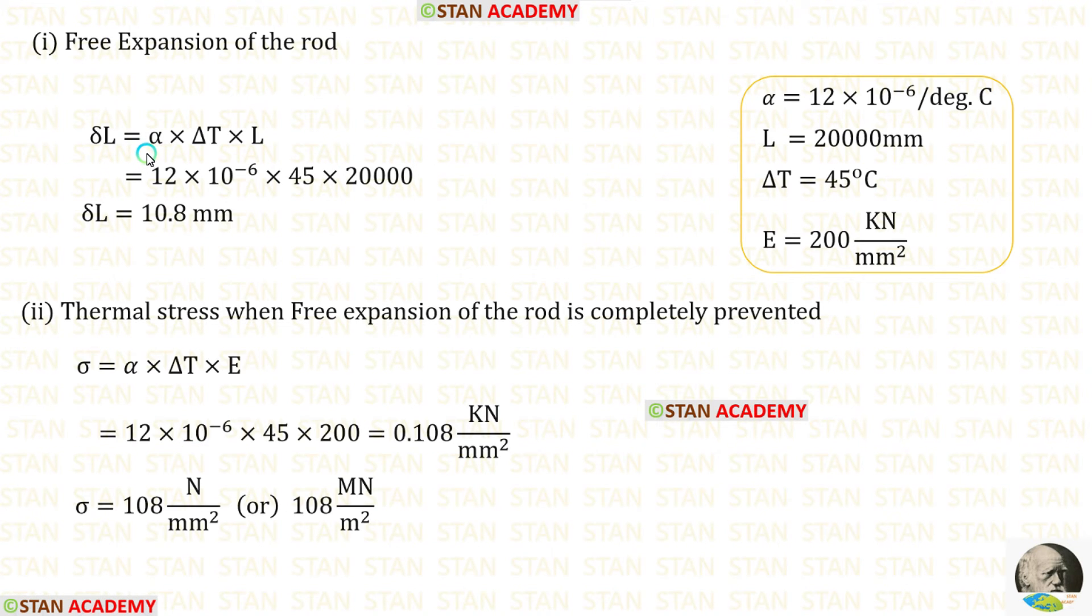The formula to find the change in length is alpha into delta T into L. Let us apply the values of alpha, L and delta T. After the calculation, we are getting delta L.